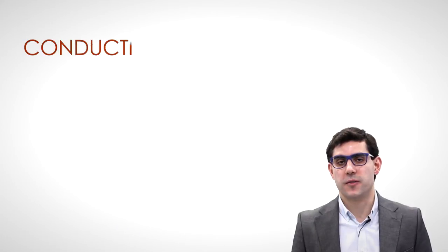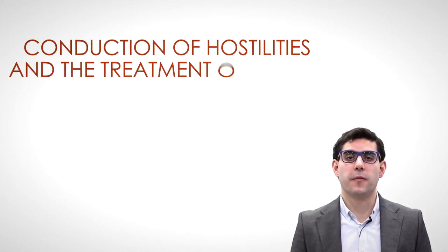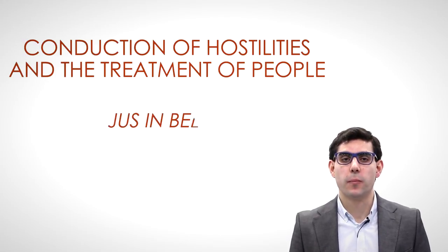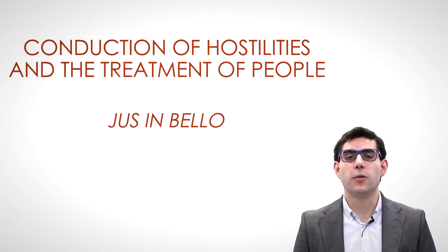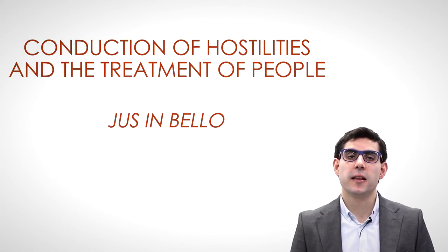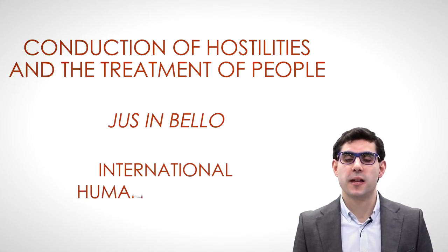On the other hand, once war has started — whether just or unjust in light of jus ad bellum — there is another level where some basic rules must be respected by all parties in the conflict regarding the conduct of hostilities and the treatment of people. This level is known as jus in bello, or the rules applicable to ongoing hostilities. This is legally known as international humanitarian law.